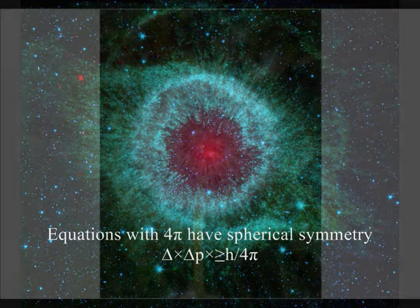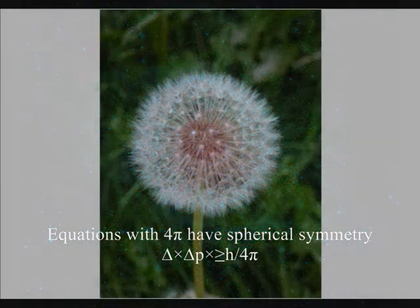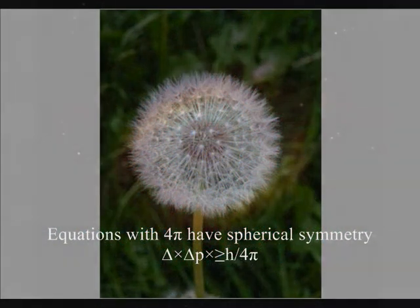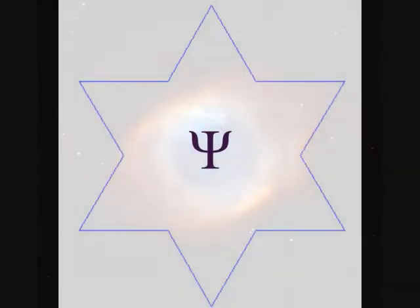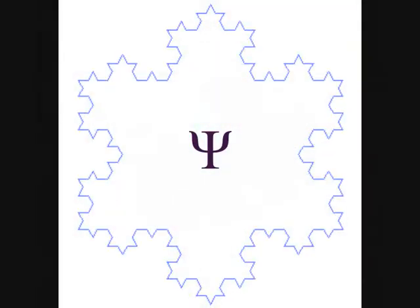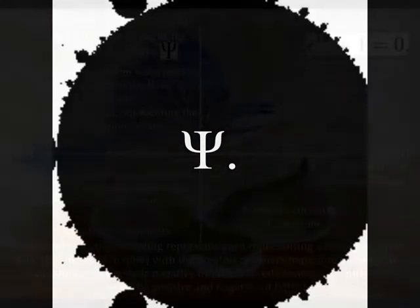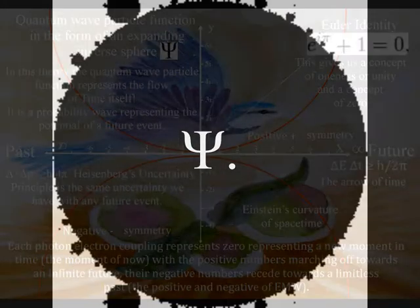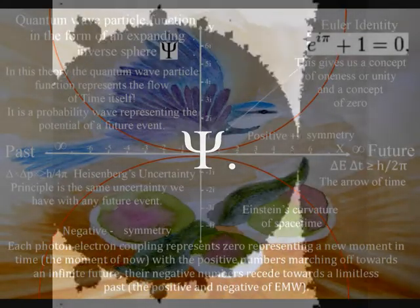It is this dynamic universal geometry that human mathematics is based upon. In this theory, fractals are formed by the repetition of the wave function, continuously collapsing and reforming, a kind of geometrical and mathematical repetition.